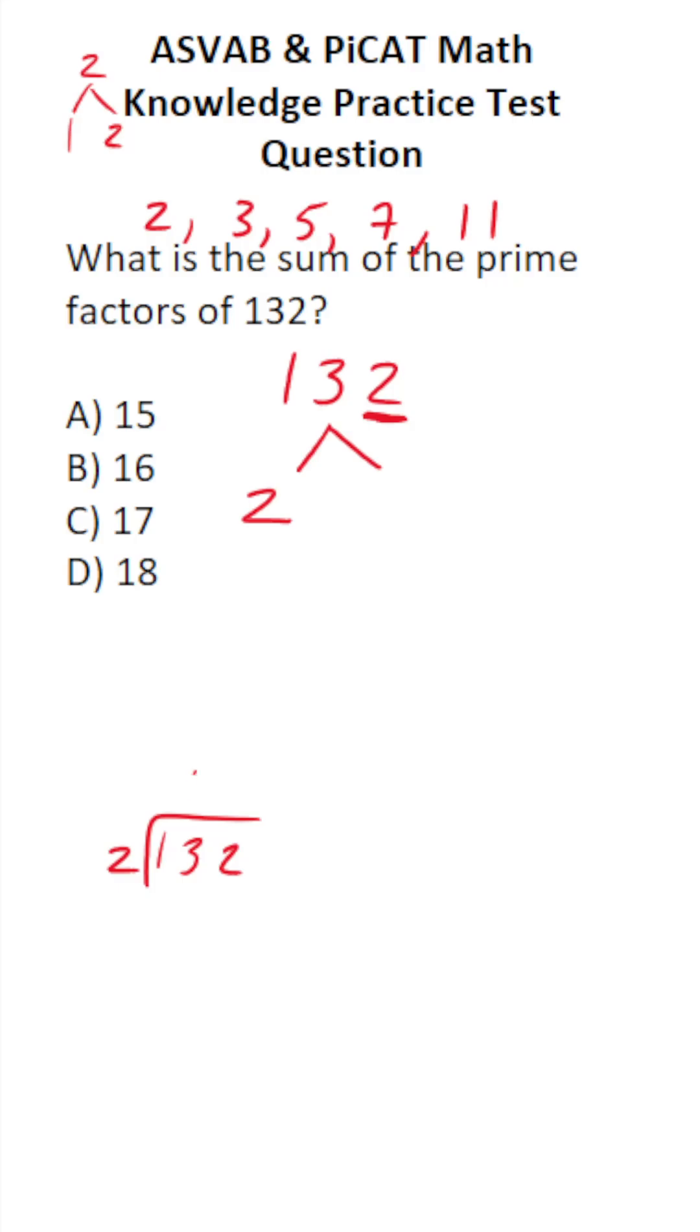2 times 6 is 12. 13 minus 12 is 1. Bring down this 2. 2 times 6 is 12. Since we have no remainder, we can stop. So 2 times 66 is 132.